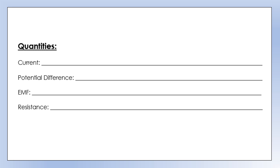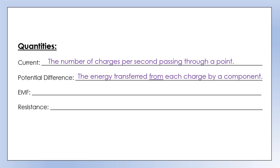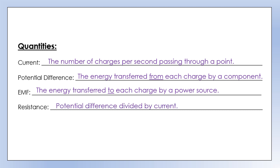In this video we're going to review some of the key concepts in electricity that we've met so far. Current is the number of charges per second passing through a point. Potential difference is the energy transferred from each charge by a component. EMF is the amount of energy transferred to each charge by a power source, causing a current to flow. Resistance is the potential difference across a component divided by the current passing through it.